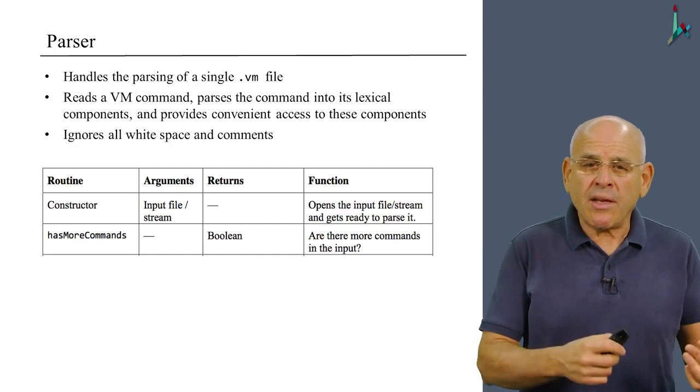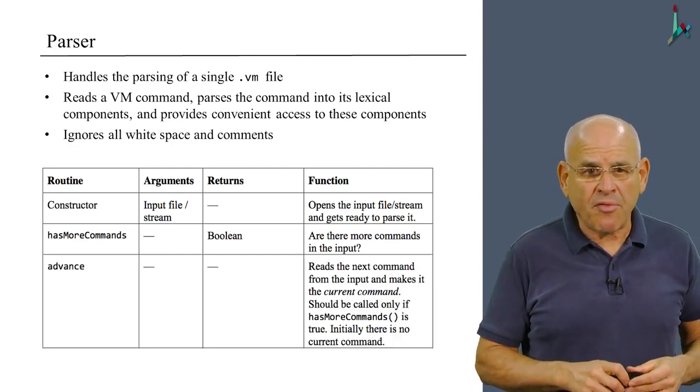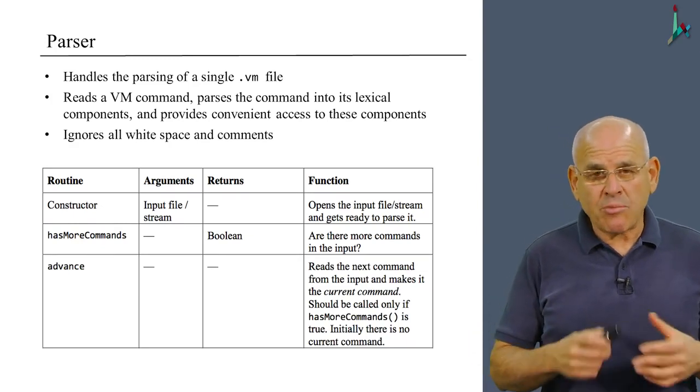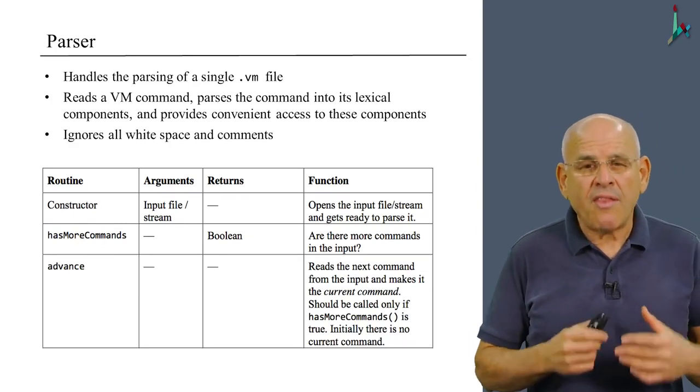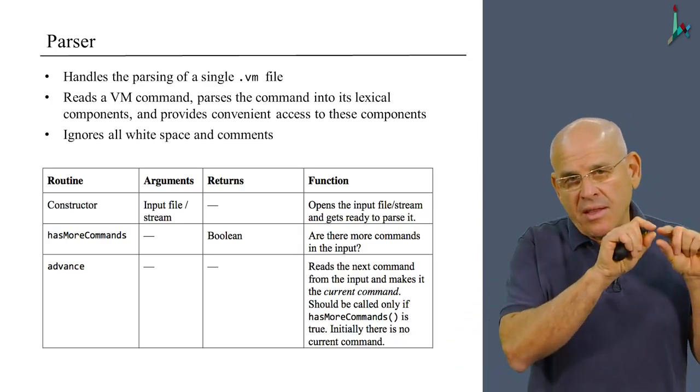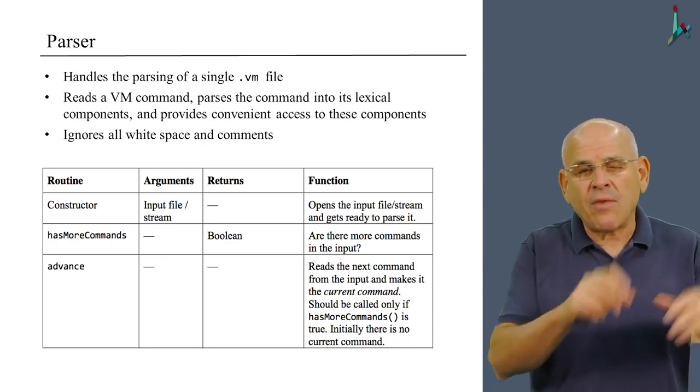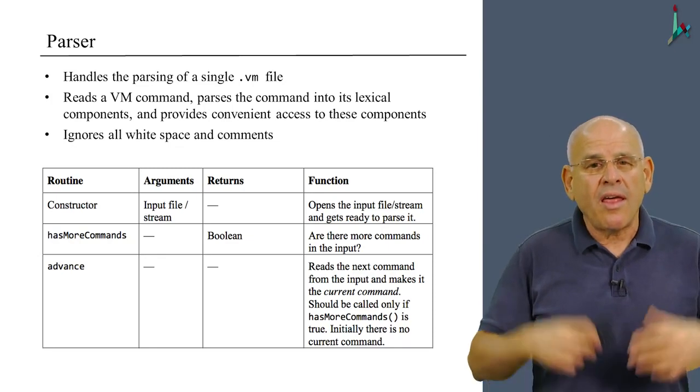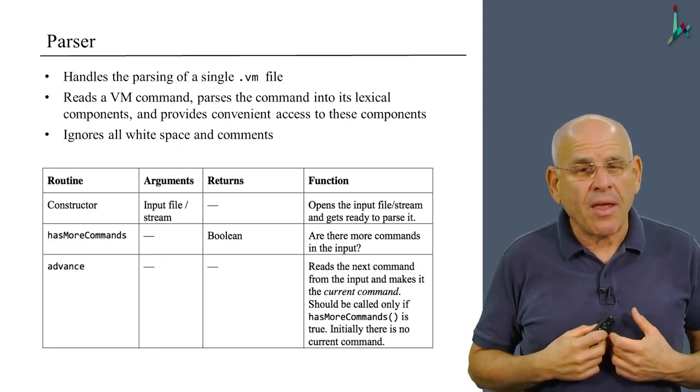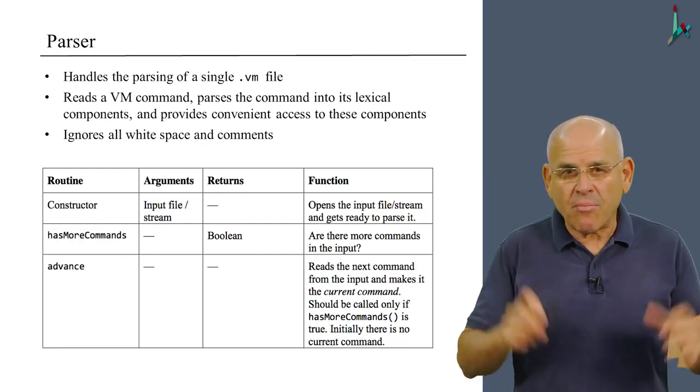Then there is this method, hasMoreCommands, which is a Boolean. And it simply tells you if there are more commands to process in the input file. If hasMoreCommands is true, then we can do an advance. And by advance, we take the current command, the command that we are now looking at in the file, and we turn it into what we call the current command within our program. And we are going to refer to this current command in many different places.